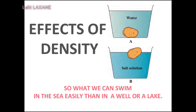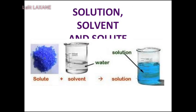Why is it easier to swim in the sea than in a well or a lake? The salt dissolves in the water — that is, it disappears. When the salt dissolves in water, its particles spread in water slowly, becoming smaller and smaller. Ultimately, they become so small that they cannot be seen — they mix completely with water. This is what is called dissolving.